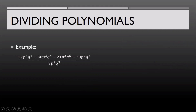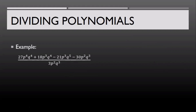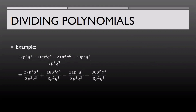Next example: we have a division of a polynomial and a monomial. To divide this, we have to divide each term of the polynomial by the common monomial divisor and apply the laws of exponents. So each term in the polynomial is divided by the common monomial divisor, and we apply the law of exponents on each term.